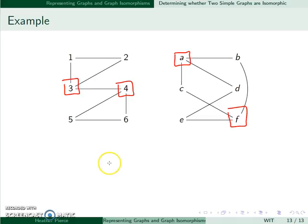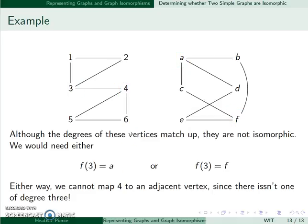However, these are still not isomorphic. The idea here is to realize that this degree 3 vertex and this degree 3 vertex in the left graph are adjacent. However, in the right graph they're not. There is no edge between A and F.